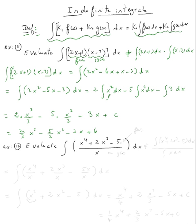Let's do example twelve. This is a division of two functions. If you call this f(x) and the denominator g(x), just like the quotient rule and product rule for derivatives, you cannot split this into the integral of the numerator divided by the integral of x dx — that is not true. What we need to do is use algebra and divide each term by x.